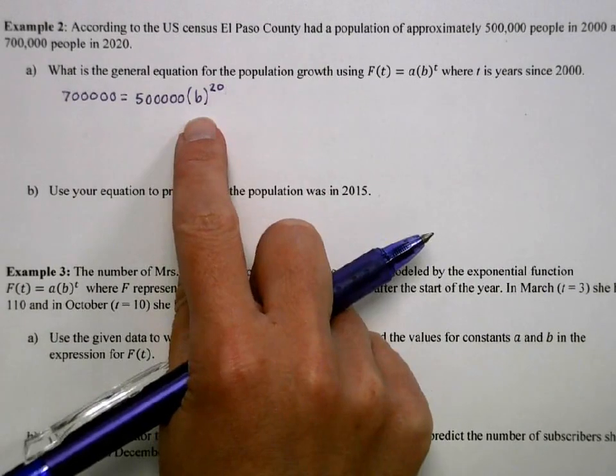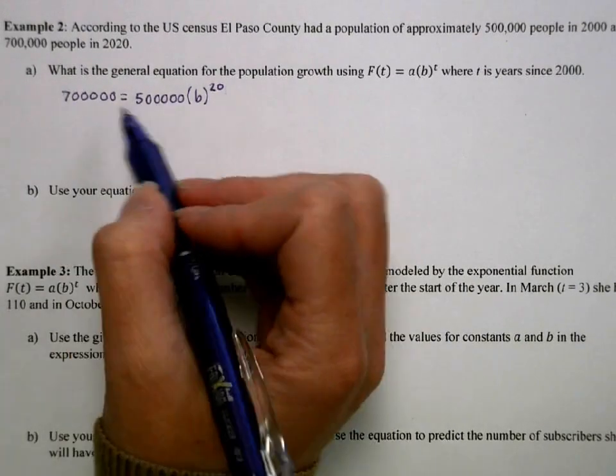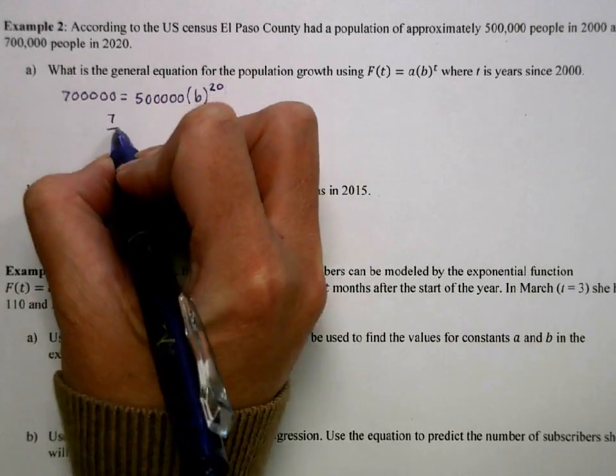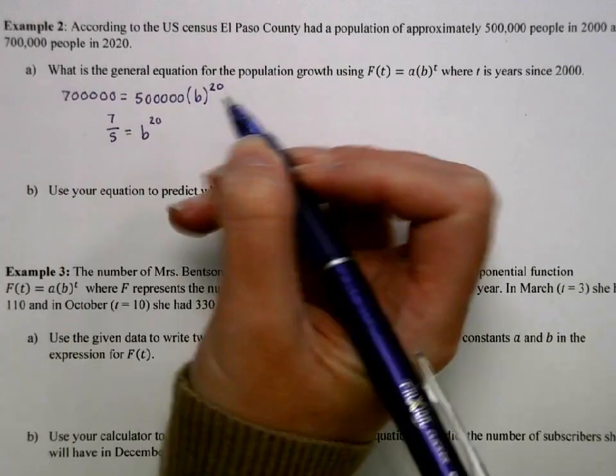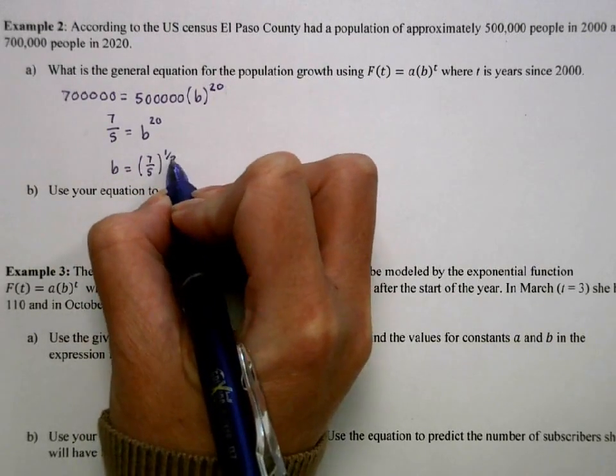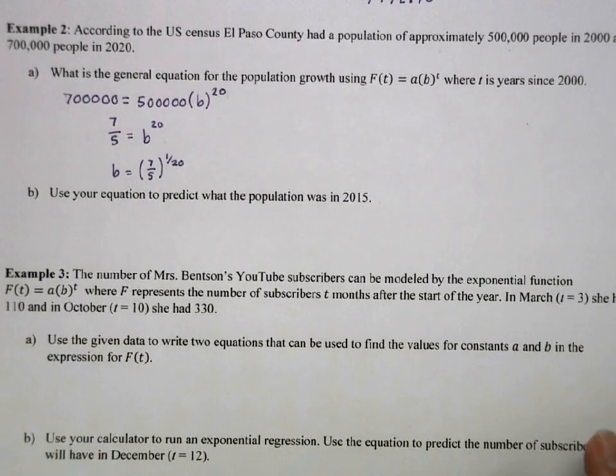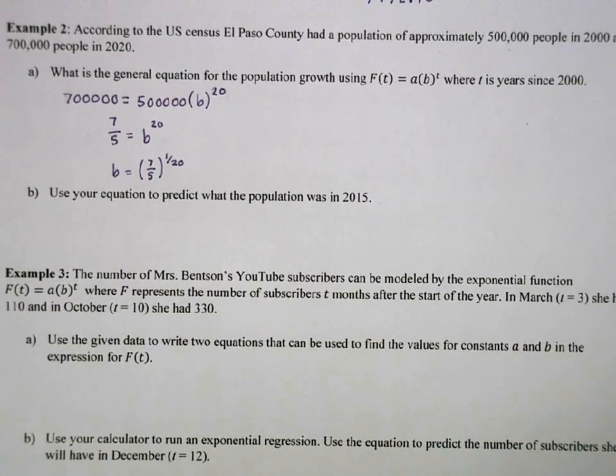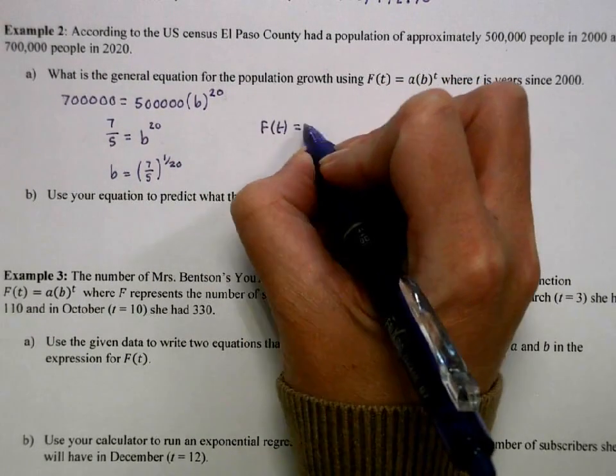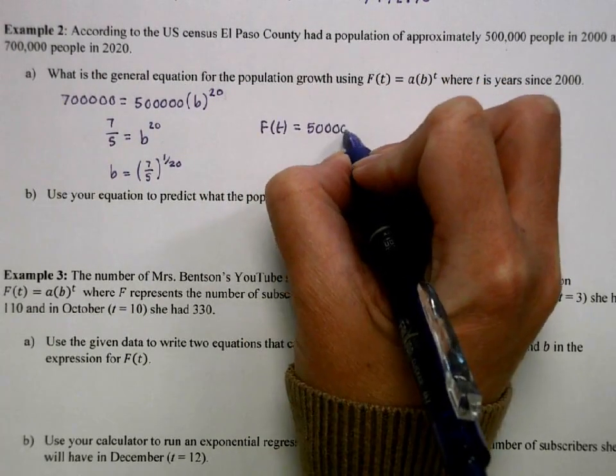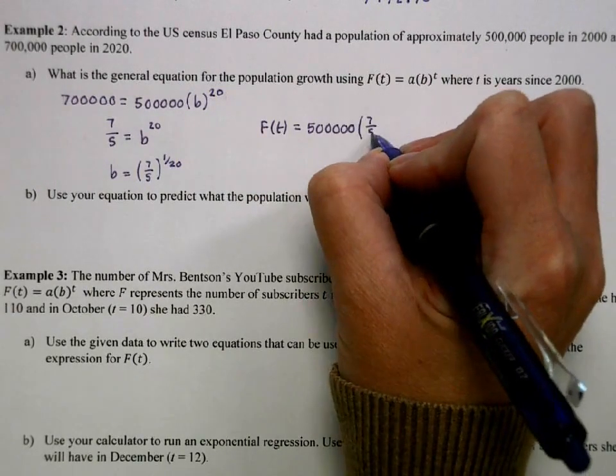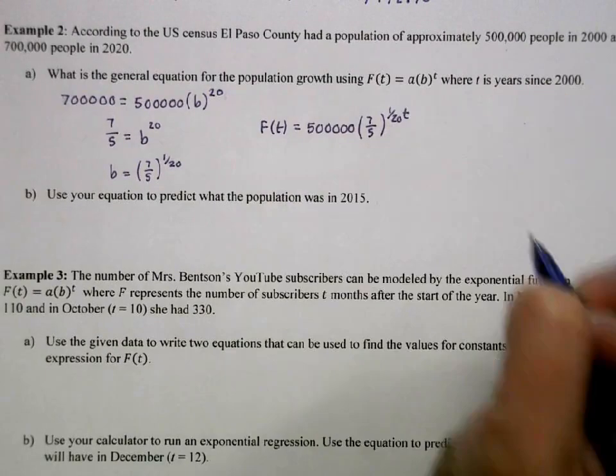So we're going to solve algebraically for B. I'm going to divide by 500,000. So 700,000 divided by 500,000 is 7 fifths. So my B is going to be 7 fifths to the 1/20th. And we're going to leave it like that in order to maintain calculator accuracy. So my equation is going to be 500,000 times (7/5)^(1/20 * t).